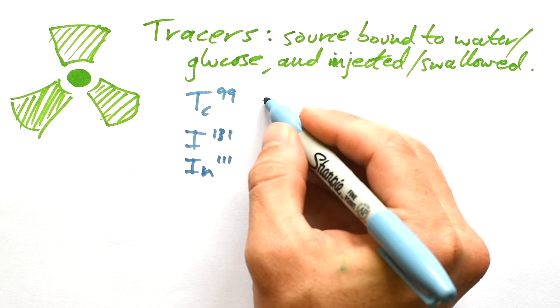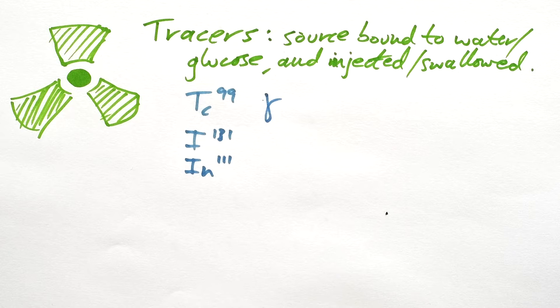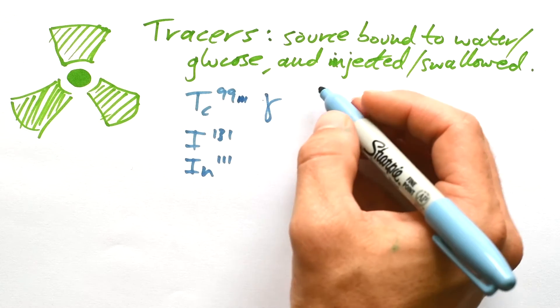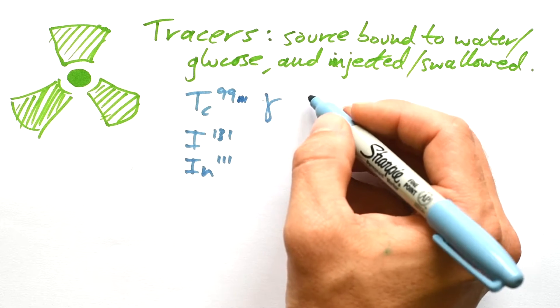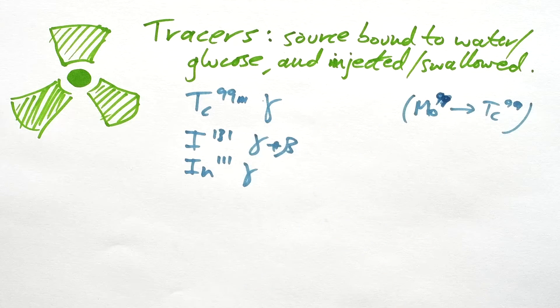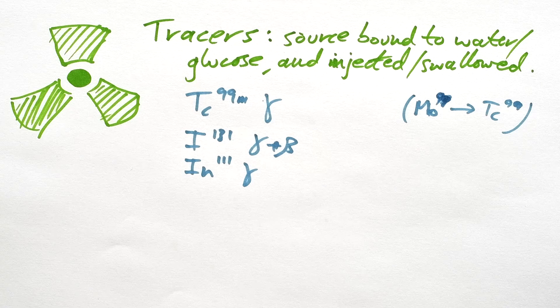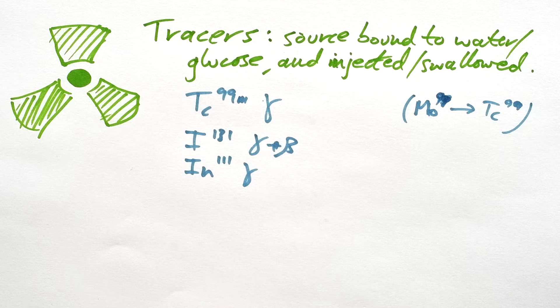Technetium, because it's in the metastable state, that means that the nucleus is in an excited state after having been made from molybdenum going through beta decay. Iodine-131 releases gamma, but it also emits beta too. And Indium just emits gamma photons as well. That's because it decays by electron capture. So electrons go into it, not come out of it.